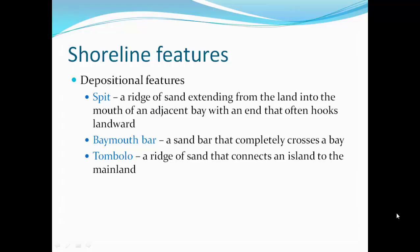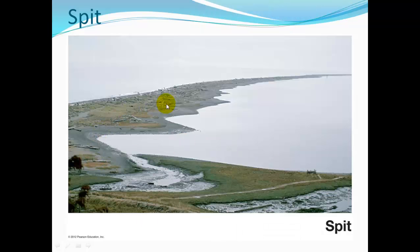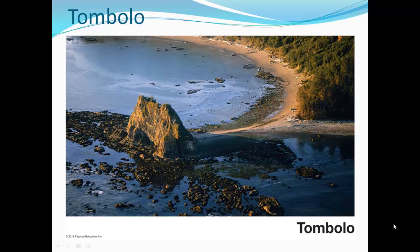Depositional features: a spit is a ridge of sand extending from the land into the mouth of an adjacent bay, with an end that often hooks landward. A bay mouth bar is a sandbar that completely crosses a bay. A tombolo is a ridge of sand that connects an island to the mainland. Provincetown at the end of Cape Cod has a well-known spit. A tombolo connects an island to the shore where beach sediment has been deposited between the two.